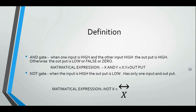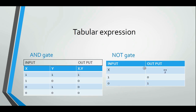Now let's look at the tabular expression — the truth table — of the AND gate and the NOT gate. For the AND gate, the output is one when both inputs are one. Otherwise the output is zero. For the NOT gate, it is the inverse: when the input is one, the output is zero, and when the input is zero, the output is one.